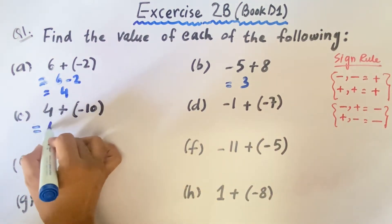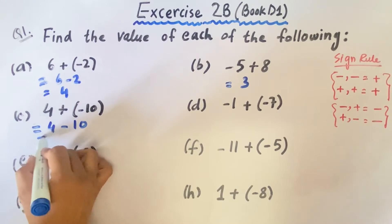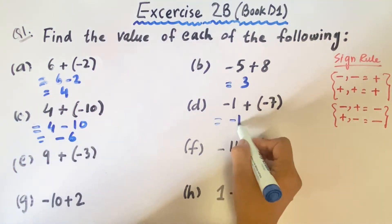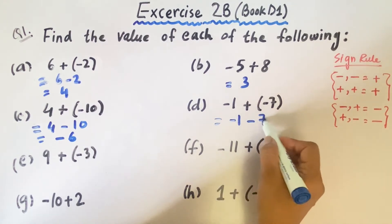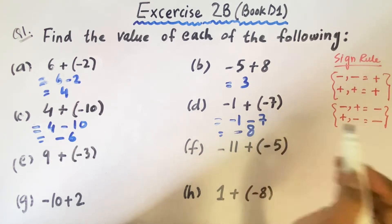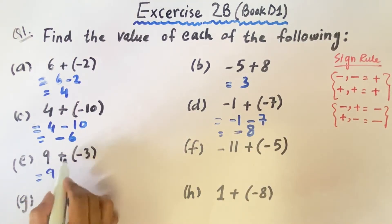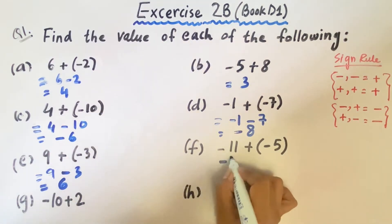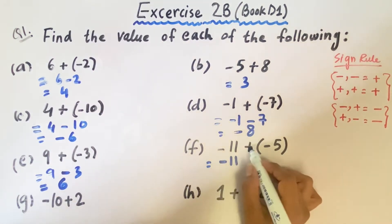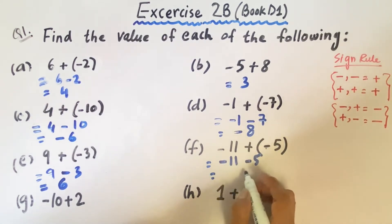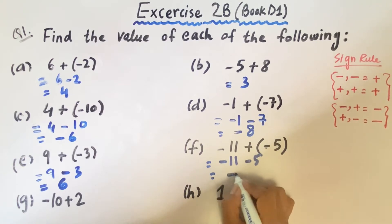In part C, we open the bracket: 4, plus minus minus 10. The answer will be minus 6. In part D, minus 1, plus minus minus 7 — minus minus will be added — and the answer will be minus 8. In part E, 9 plus minus minus 3: plus minus minus gives positive, so the answer is positive 6. In part F, minus 11, plus minus minus 5: minus minus gives plus, so 2 negatives are added and the answer will be minus 16.